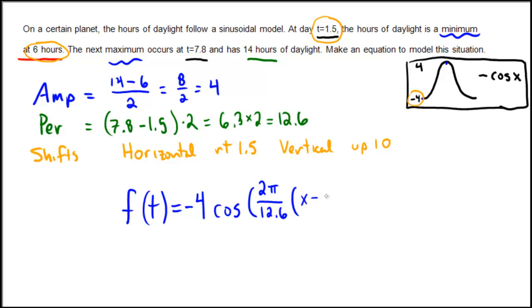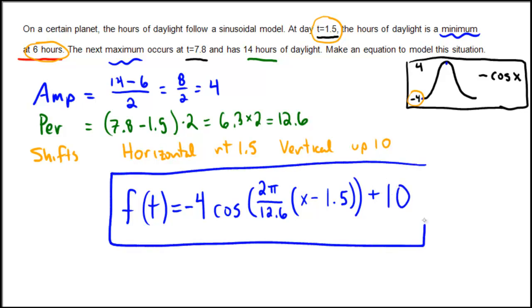And we have a vertical shift of up 10, which is a positive 10 shift. So this model right here would model the amount of daylight on this particular planet based on a sinusoidal model.